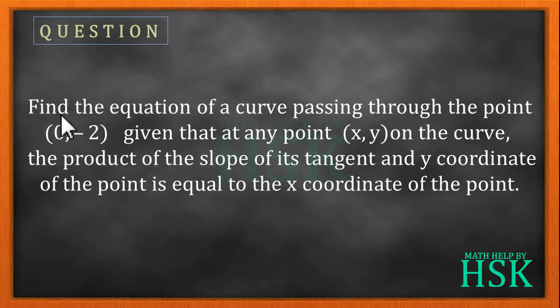The question is: find the equation of the curve passing through the point (0, -2) given that at any point (x, y) on the curve, the product of the slope of its tangent and y coordinate of the point is equal to x coordinate of the point.